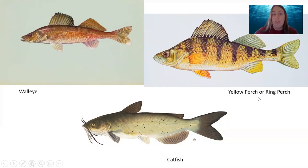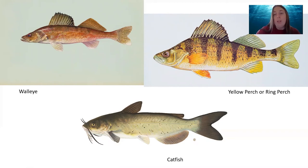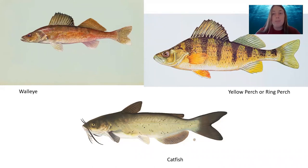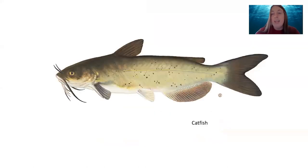Now that we've learned a little about fish identification, we're going to put our skills to the test. In the upper left we have a walleye, upper right a yellow perch (also known as the ring perch), and down below we have the catfish. Which one of these fish has a sub-terminal mouth? Feel free to refer back to your drawing. The answer is the catfish — if you look at the mouth, you'll see that the upper jaw or lip hangs out further than the lower jaw, making it a sub-terminal mouth.